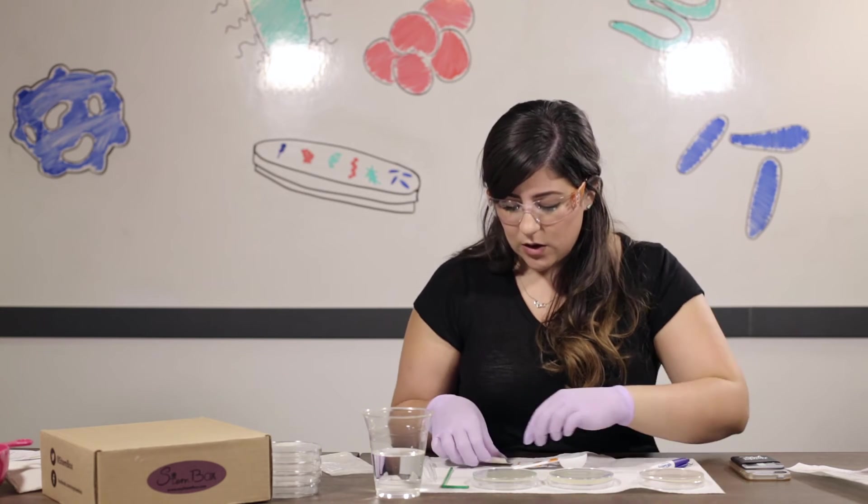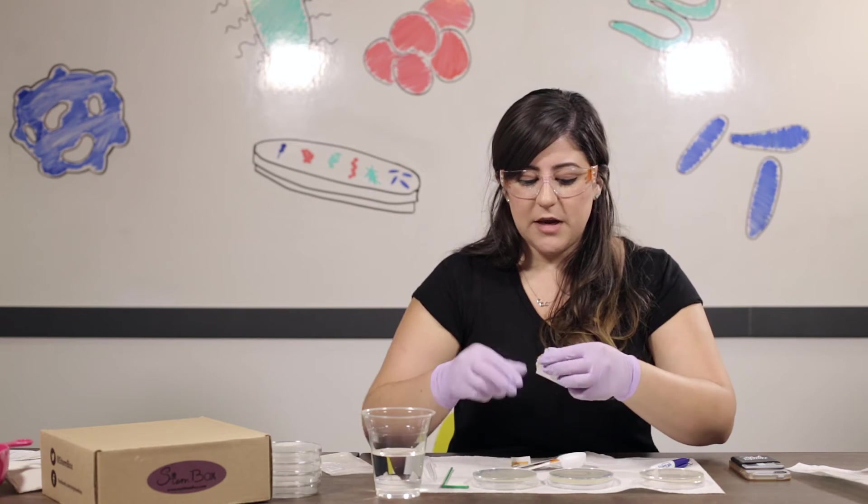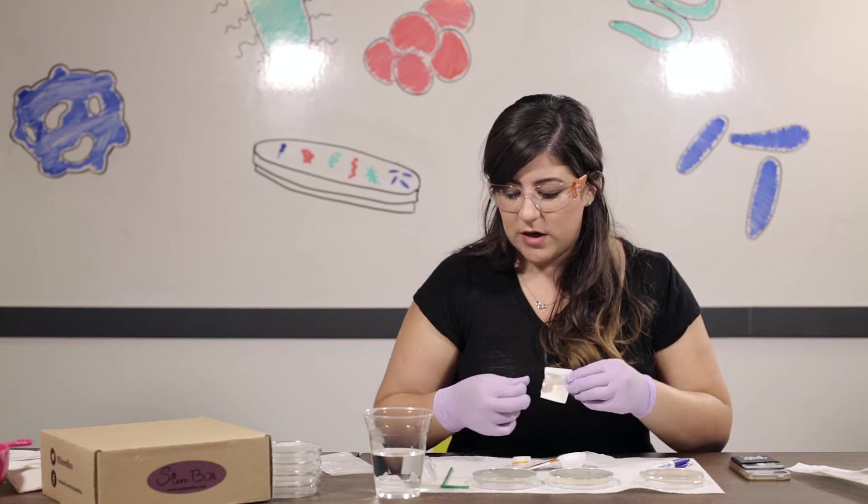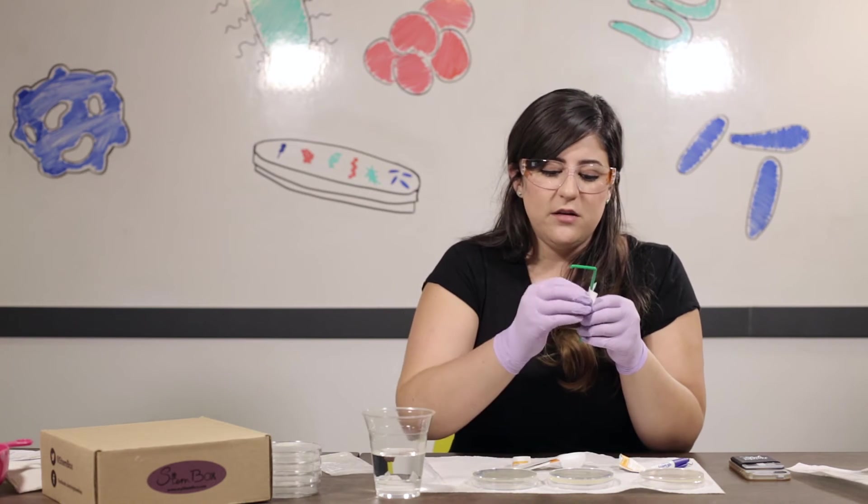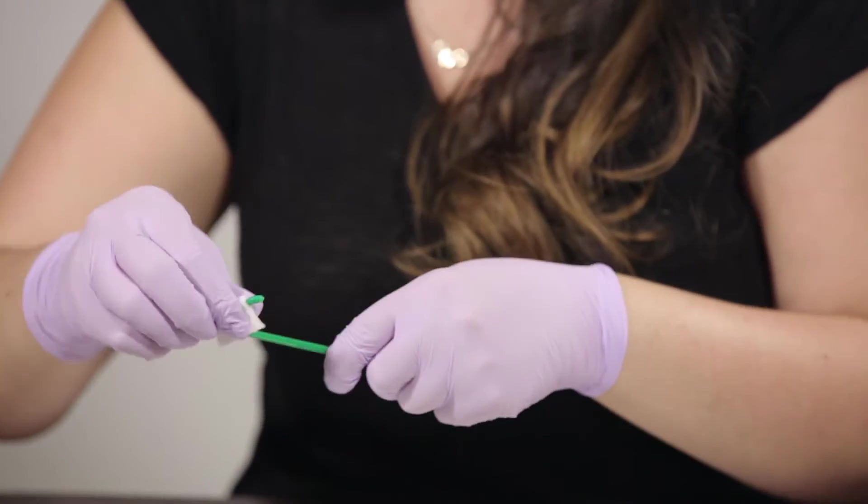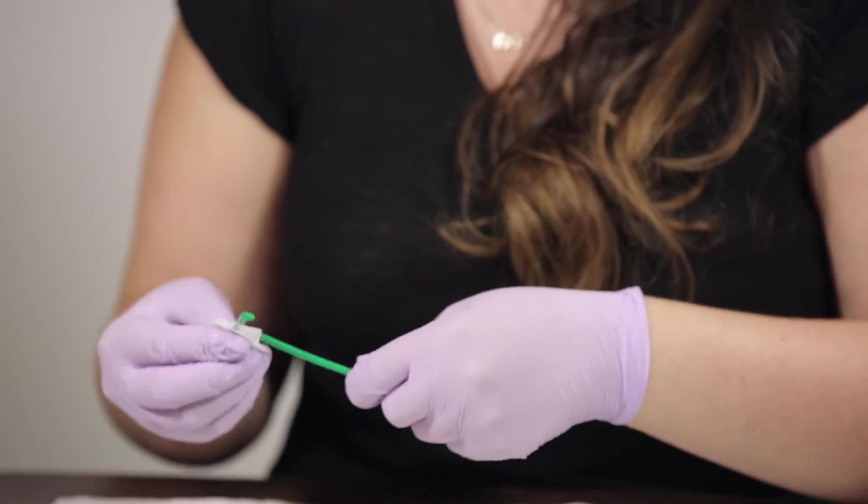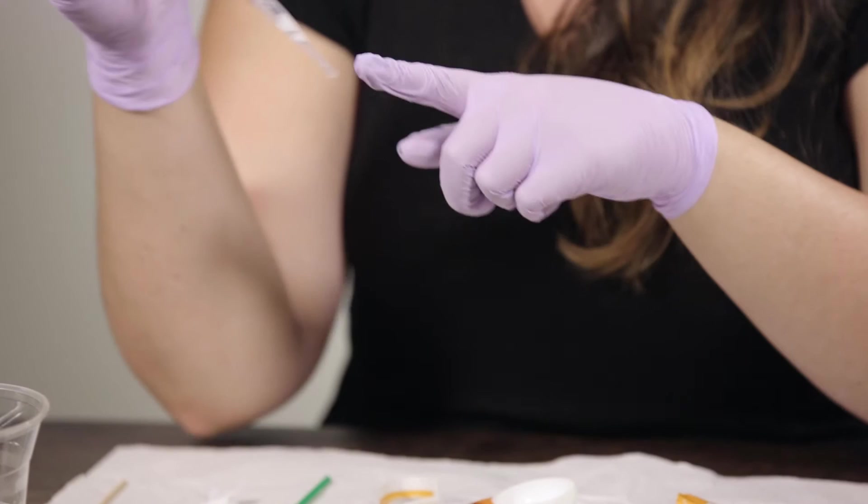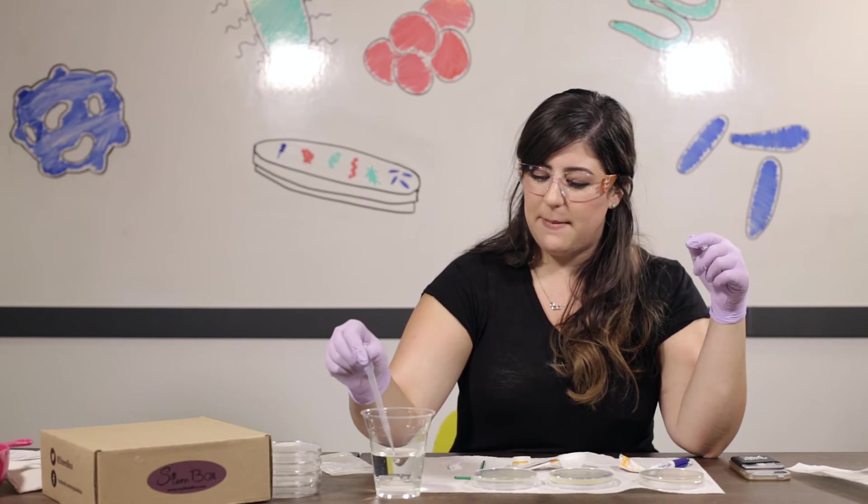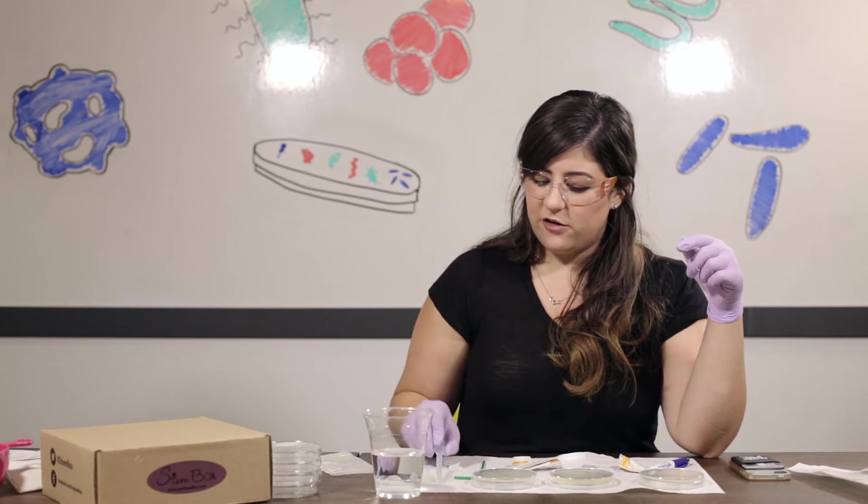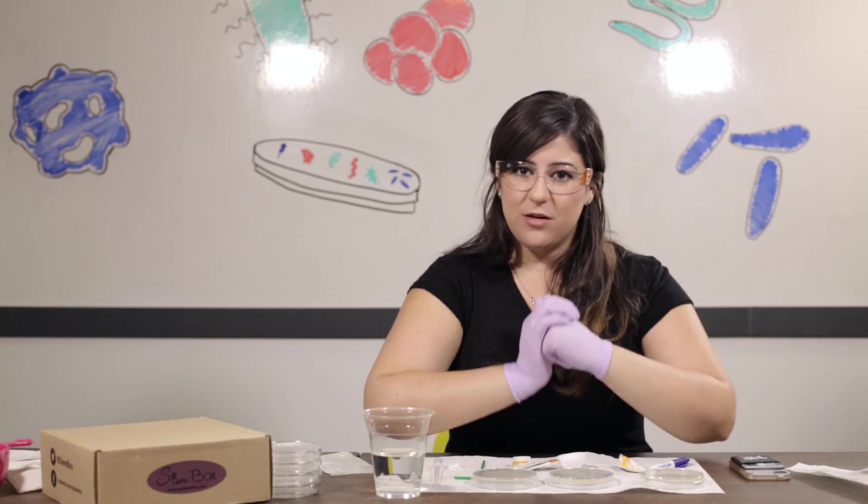And lastly, when you're done using your tools, make sure that you sanitize them in between so that you're able to use them for other experiments. So go ahead and use your wipe, your alcohol wipe, and clean off your L spreader. And if you have alcohol at home, go ahead and draw up and down a few times for your pipette to clean it and let it dry sitting down. And that's how you culture a liquid sample.